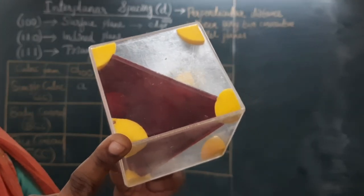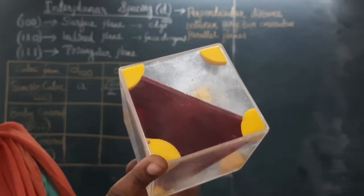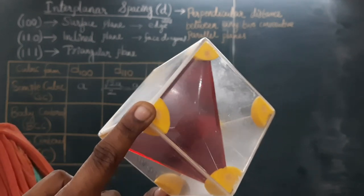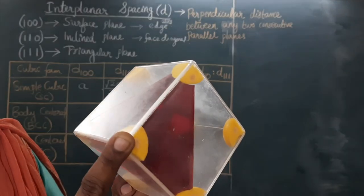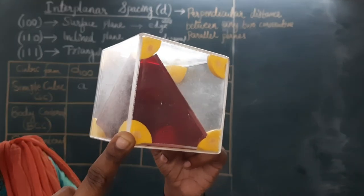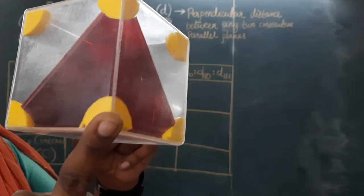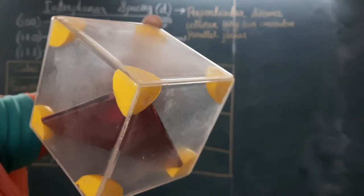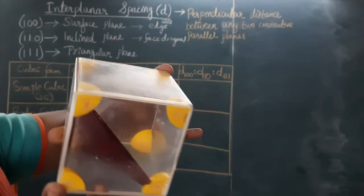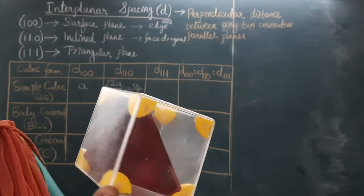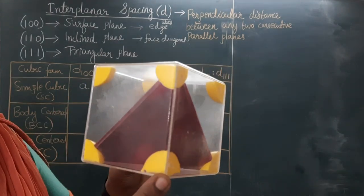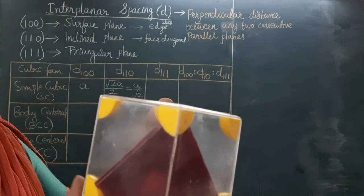Now see this plane — this is the 111 plane in a simple cubic structure. The shape of this 111 plane is triangular. How many triangular parallel planes can we consider in this cubical structure? We can consider one through the bottom, one through the top, and one more triangular plane through these two atoms. The parallel 111 planes passing through the atoms in the simple cubic unit cell are 1, 2, 3 inside and 4 here.